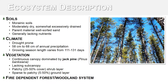Dry jack pine forests have sandy soils that typically lack nutrients and are located on sandy outwash plains. These areas are drought prone and normally receive 58 to 68 centimeters of precipitation each year, a majority of that occurring or released in the winter. The growing season length varies from 111 to 131 days. This plant community's canopy is dominated by jack pine and usually lacks a sub-canopy layer. The shrub layer is patchy with a sparse to patchy ground layer. This plant community is considered a fire dependent system and needs fire to perpetuate itself.